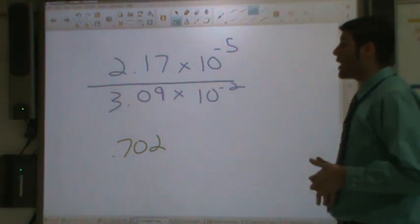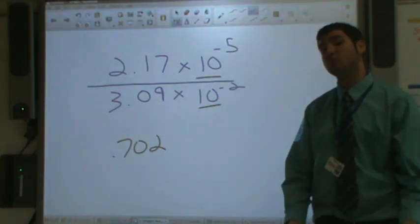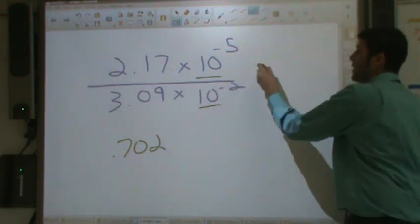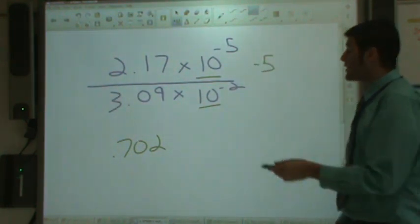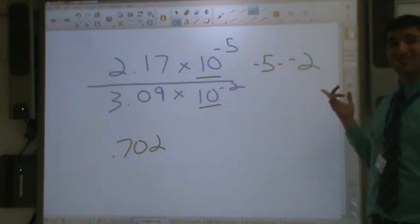Step two says that we subtract the exponents, because we're dividing here. They have the same base of 10. So we can subtract the exponents. We take the negative five and subtract negative two.